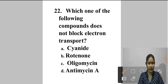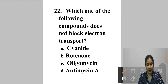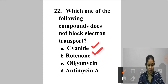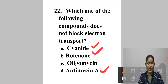Question 22: Which compound does NOT block electron transport? A. Cyanide — affects practically all metalloenzymes. B. Rotenone — a plant product used as pesticide; blocks electron transport chain between complex I and coenzyme Q. C. Oligomycin. D. Antimycin A — interferes with electron flow from cytochrome bH in complex III. Oligomycin does not block electron transport. Answer is option C — oligomycin.